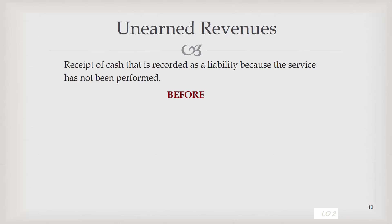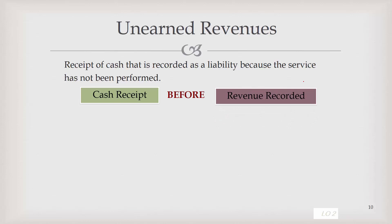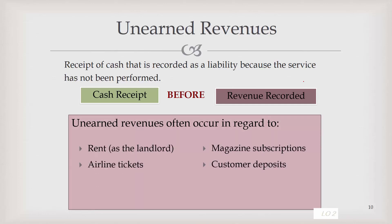Now let's look at unearned revenues. Unearned revenues occur when you receive the cash before you provide the service — cash comes in one period, the service is performed and revenue recognized in a later period. Unearned revenues can occur with rent, if you're the landlord and your tenant pays for the next six months of rent. Airline tickets are another example — when you buy your ticket in advance, the airline has unearned revenue until they provide you that plane ride. Magazine subscriptions, customer deposits, and anything similar can also be unearned revenue.